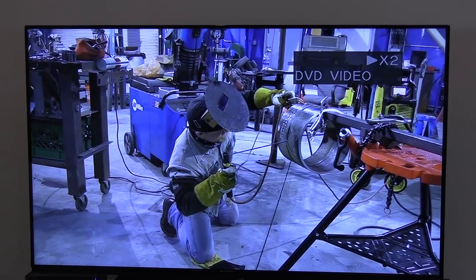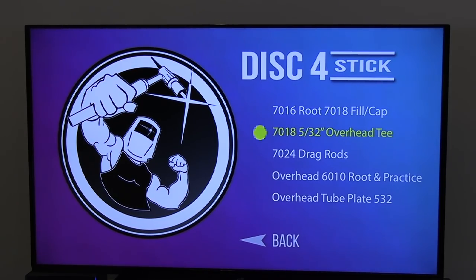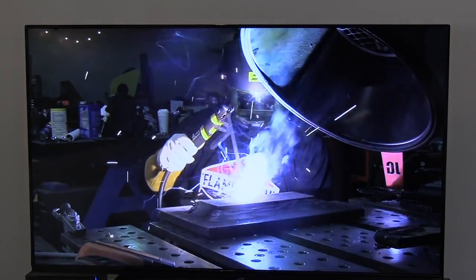Here Andrew is showing body positioning and how to work your way downhill on a downhill 6010 root on a 12-inch pipe. This is the hot pass, and all passes and cover pass are shown too with large diameter rod.